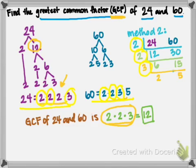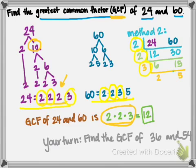So now it's your turn. I want you to find the greatest common factor of 36 and 54 and see which method you like better. You don't have to know both, but it is kind of neat that both of these methods are really pointing to the same thing. You're looking at what's common, and then you're taking out what's common, and you're multiplying them together to get the greatest common factor.